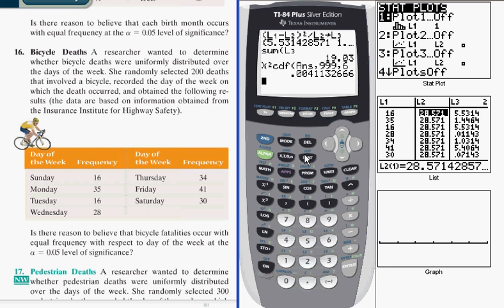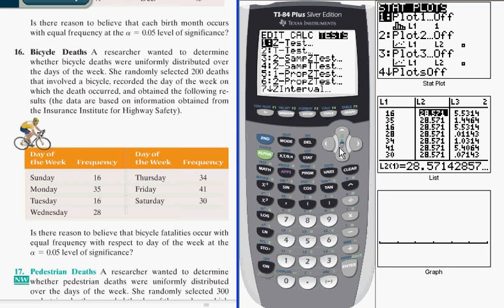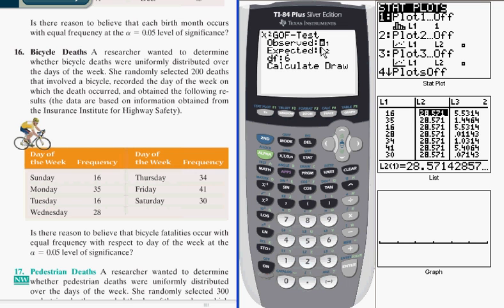If you're using an 84, let me show you quickly how you would do this test. And if I choose chi-squared G-O-F, what you're going to see is it's going to prompt you for the observed values in a list, which is how we have it at list L1, and the expected values also in a list, L2. Degrees of freedom, which we have decided was 6, and then we calculate.